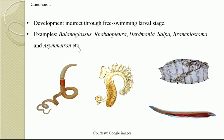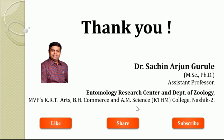The examples of Acrania or Protochordata are Balanoglossus, Rhabdopleura, Herdmania, Salpa, Branchiostoma, and Asymmetron. Herewith we have learned the salient features of the group Acrania or Protochordata. Thank you very much.